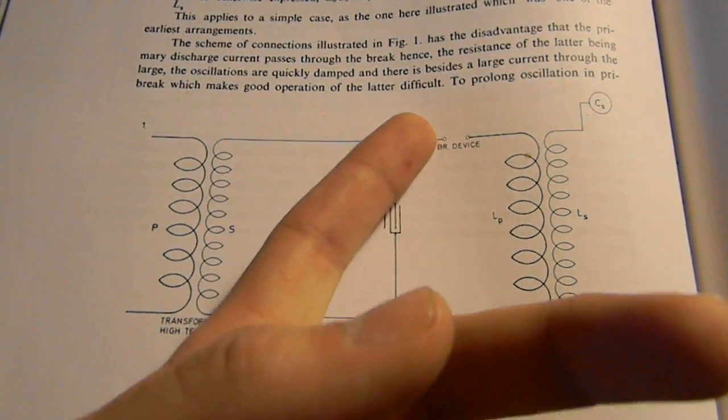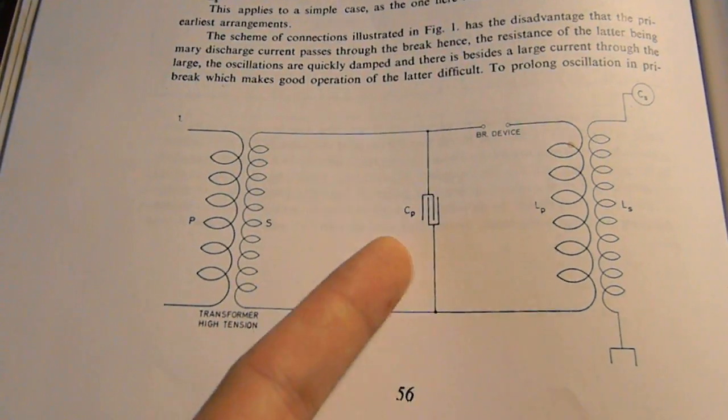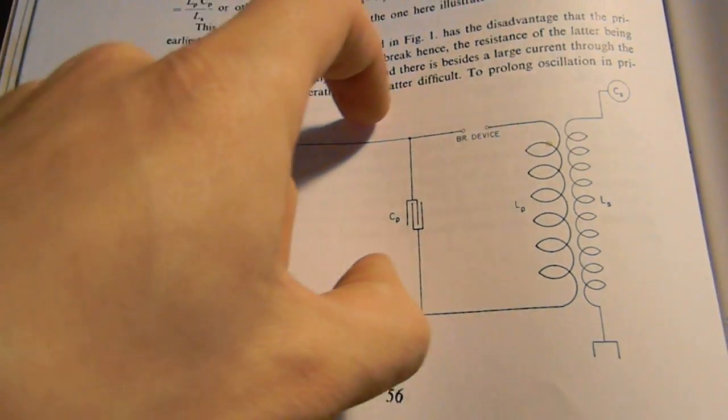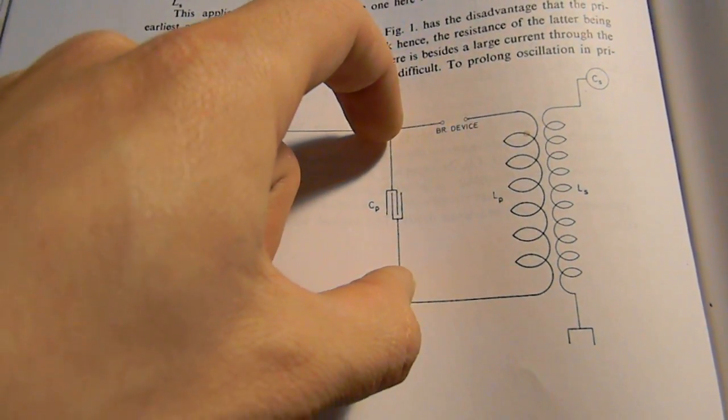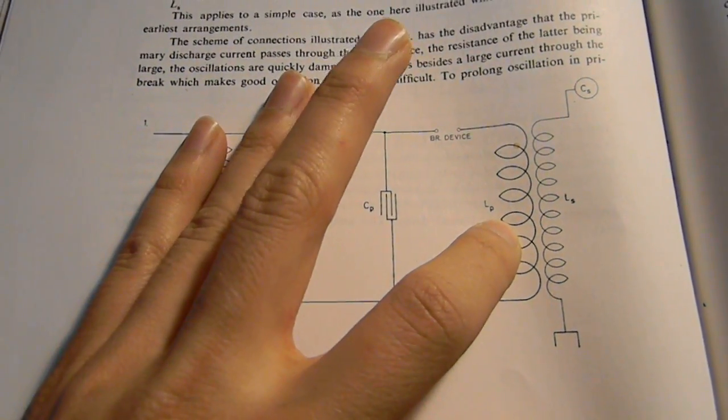This here is basically to get high voltage into the capacitor, so we can just look at this as a battery essentially. So we have a battery, brake device, and our circuit, our coil.